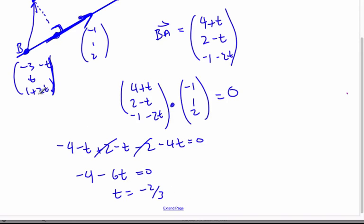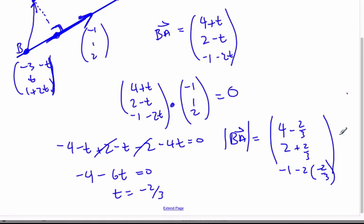So when t is negative 2 thirds, I get the correct point. This is my vector BA, and so I want to find the magnitude of BA, which will be the shortest distance, when I go 4 minus 2 thirds, 2 plus 2 thirds, and negative 1 minus 2 times negative 2 thirds. I want to find the magnitude of that vector here.